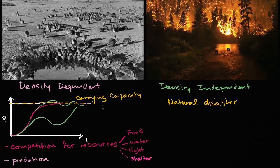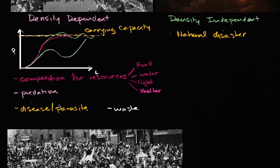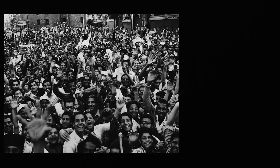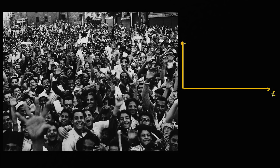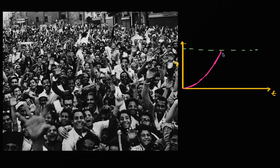Now with all of this talk about carrying capacities and the different density dependent factors, you might be thinking about human beings. We are for sure a species, and so the same ideas apply to us. Is there a natural carrying capacity for the environments that we are in? There's a famous philosopher and scientist, Thomas Malthus — I have a whole video on him — but he hypothesized that humanity had a very serious problem. Our populations were growing exponentially, and he said there's just a natural carrying capacity for human beings. The term for that carrying capacity in the case of human beings that Thomas Malthus set up is the Malthusian limit.